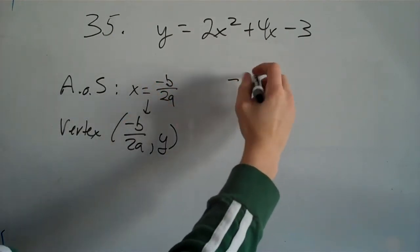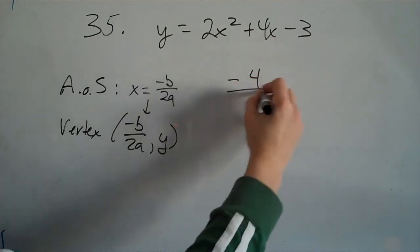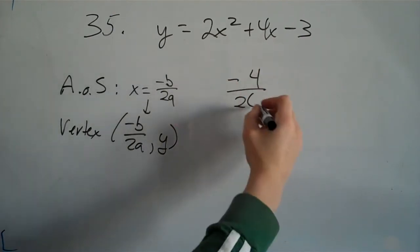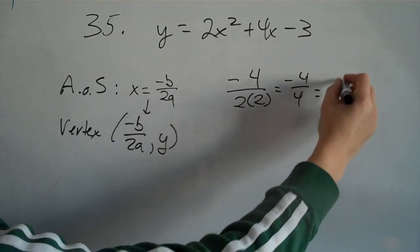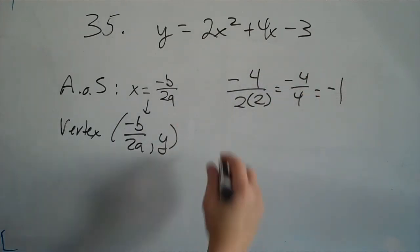So I'll take negative b, b is 4, over 2a, 2 times a is 2, so it equals negative 4 over 4, which equals negative 1. So that's the x value of the vertex.